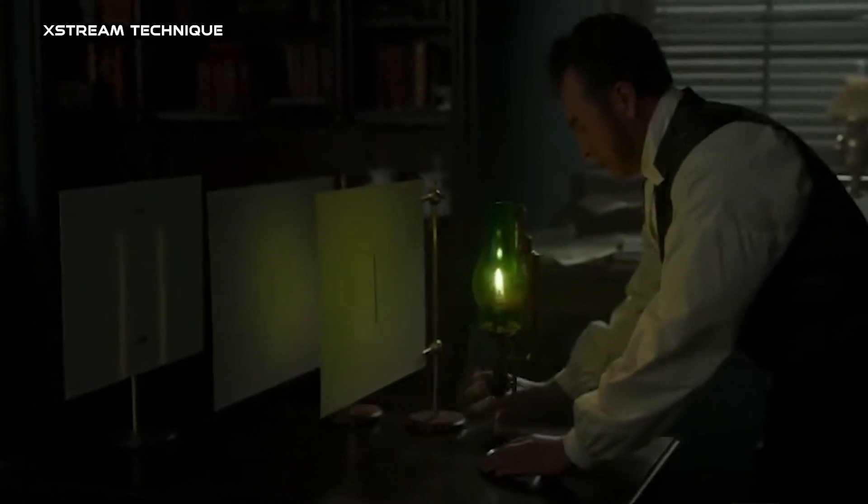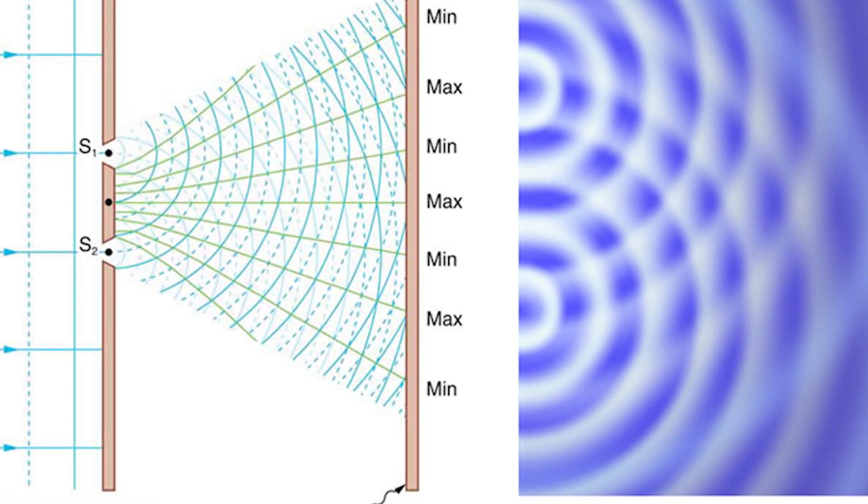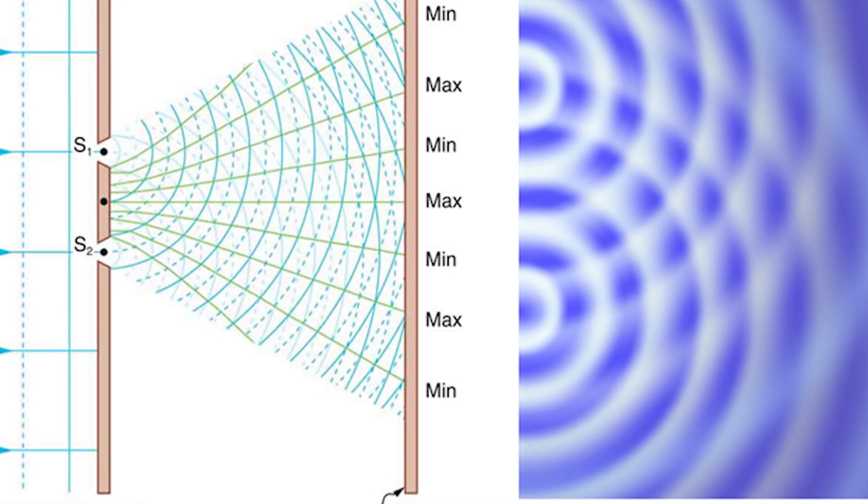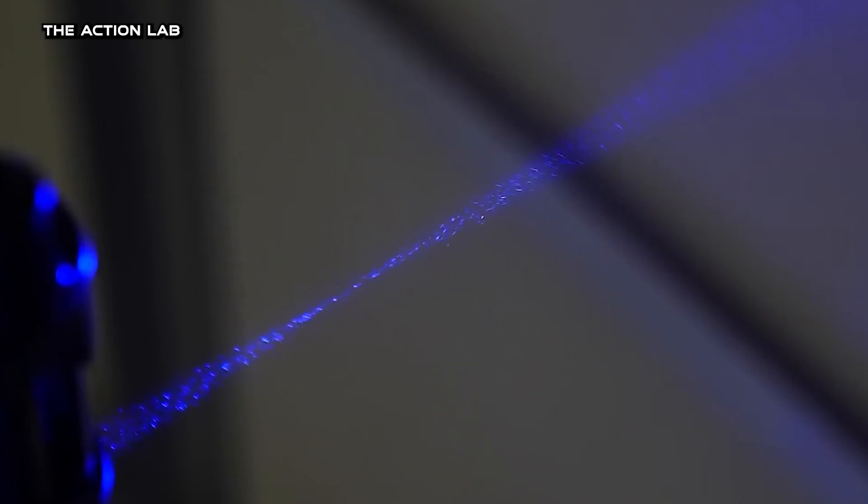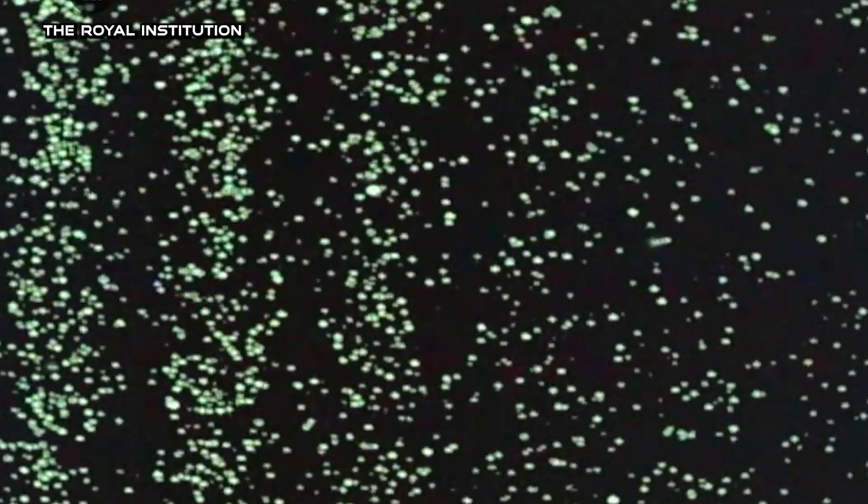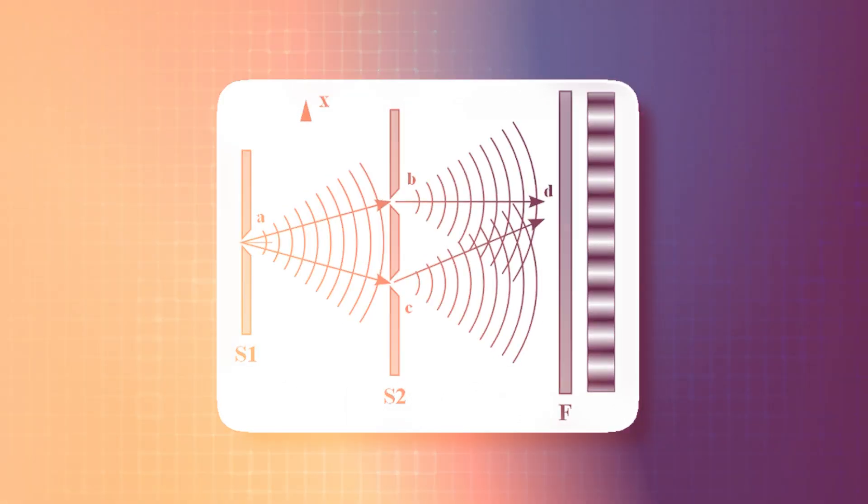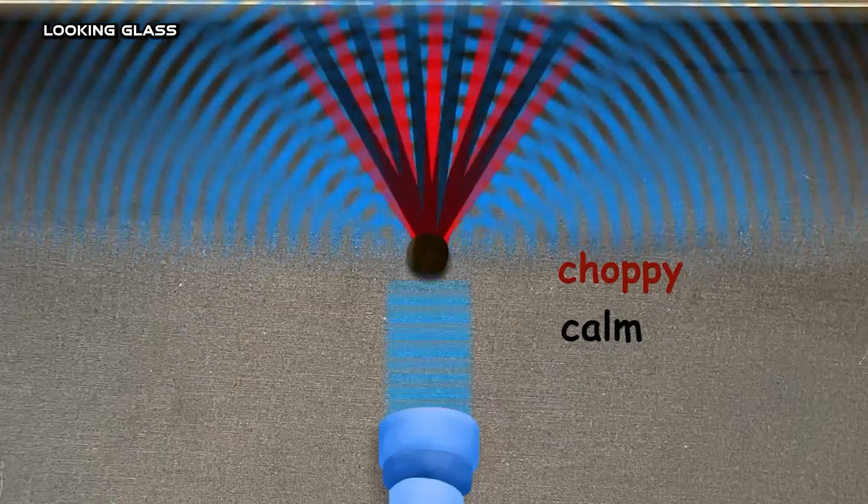He found out that when you send particles like electrons through the slits one at a time, they still create an interference pattern, as if they're going through both slits and interfering with themselves. This suggests that these particles behave like waves, spreading out and interfering with each other. But when you try to observe which slit each particle goes through, the interference pattern disappears and they behave like individual particles again. This whole experiment tells us that particles at a quantum level show characteristics of both particles and waves.